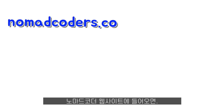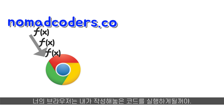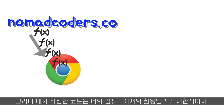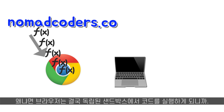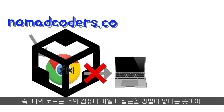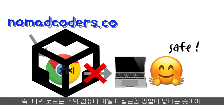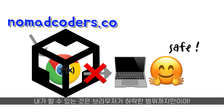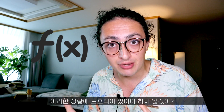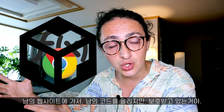To understand how insecure it was, let's first understand how security works today in browsers. If you go to a website like nomadcodes.com, your browser will execute the code there, but that code is limited to what it can do on your computer because the browser runs it in an isolated sandbox. That means the code can't access your files, delete files, or create files — it can only do what the browser allows. This is very important because every time you visit a website, you are executing somebody else's code in your machine, and the browser protects you.